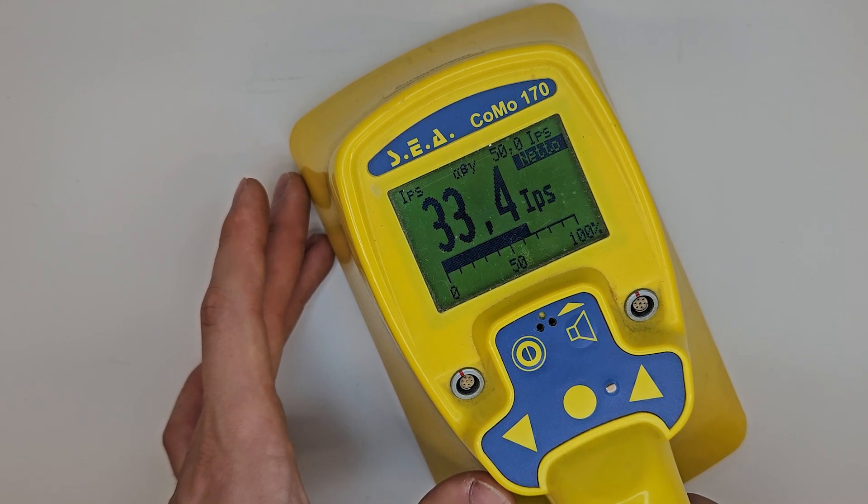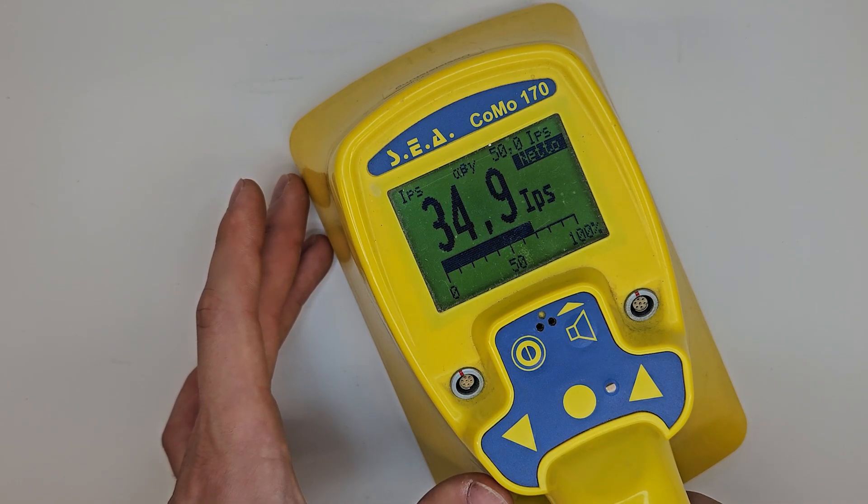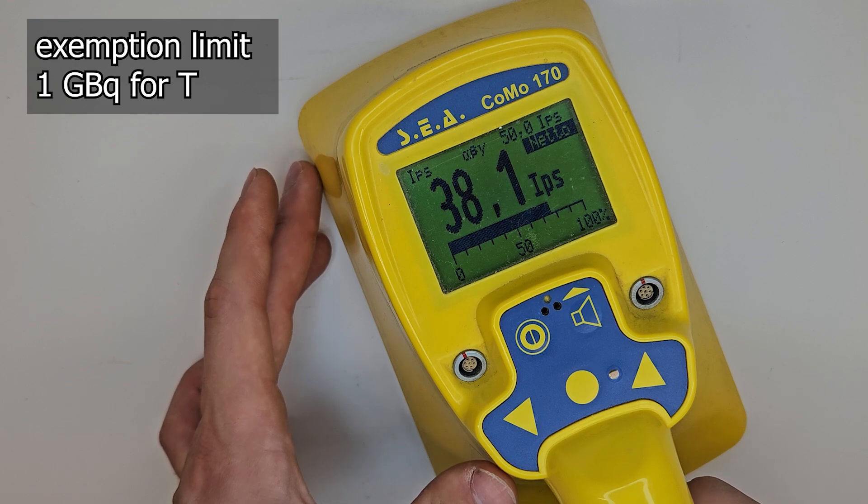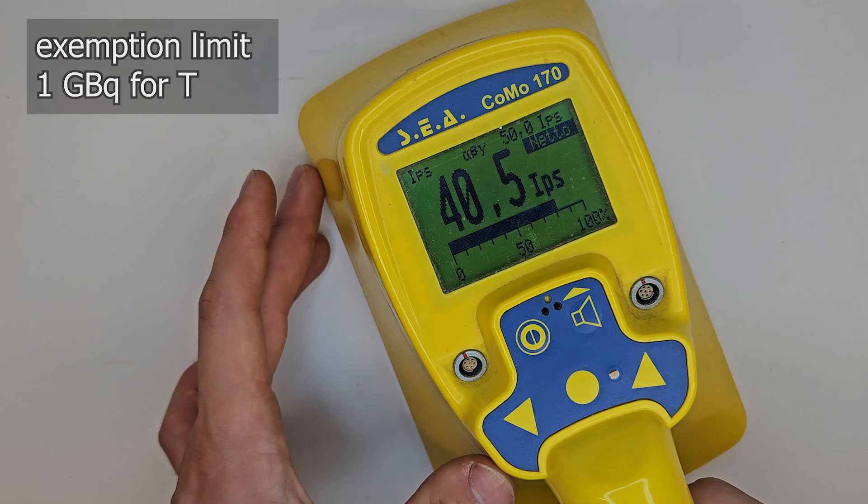With the KOMO you can actually detect directly that activity is present. How much activity? The clearance or exemption limit in Germany is 1 gigabecquerel. This is not sufficient to measure anything with conventional detectors.